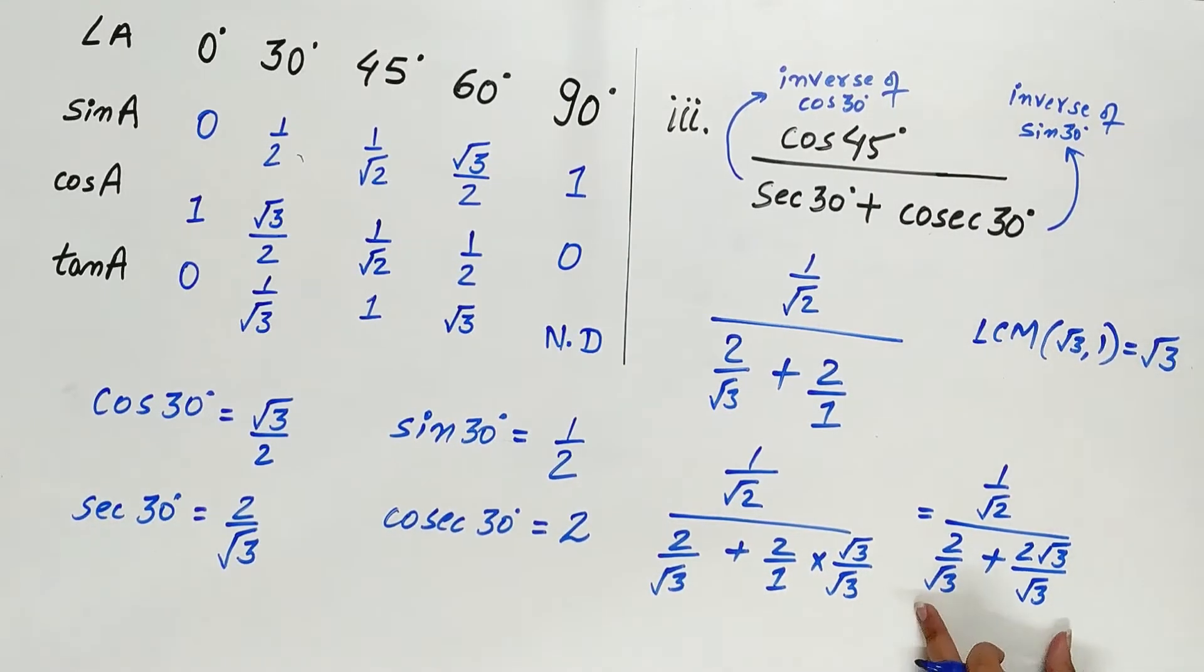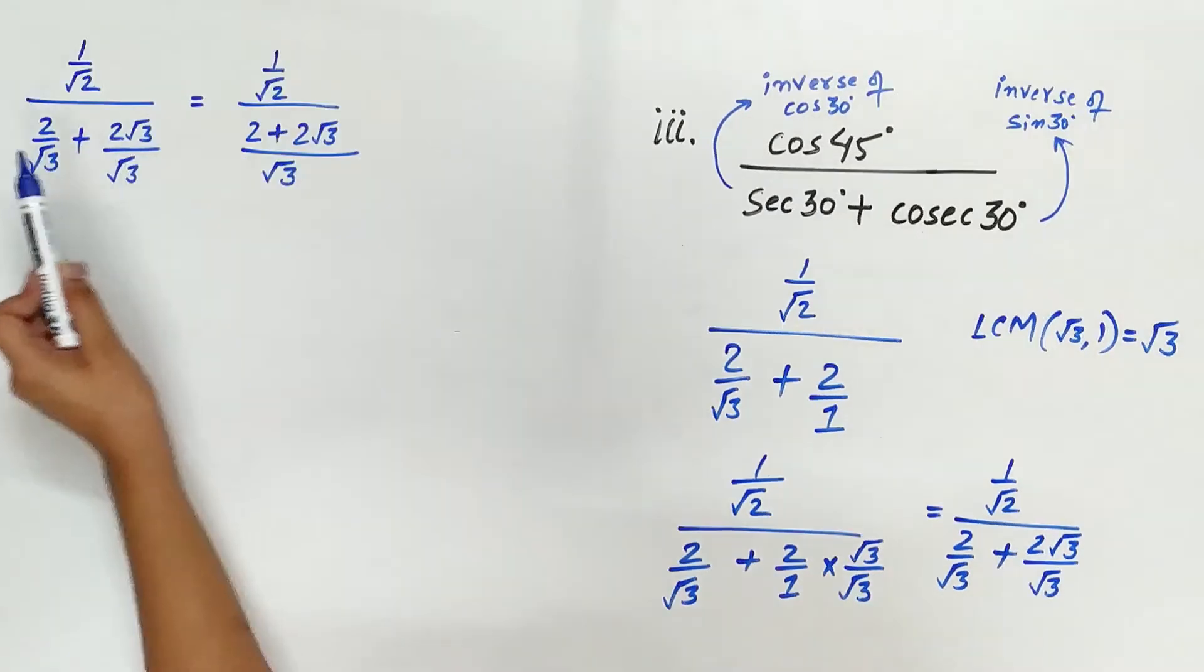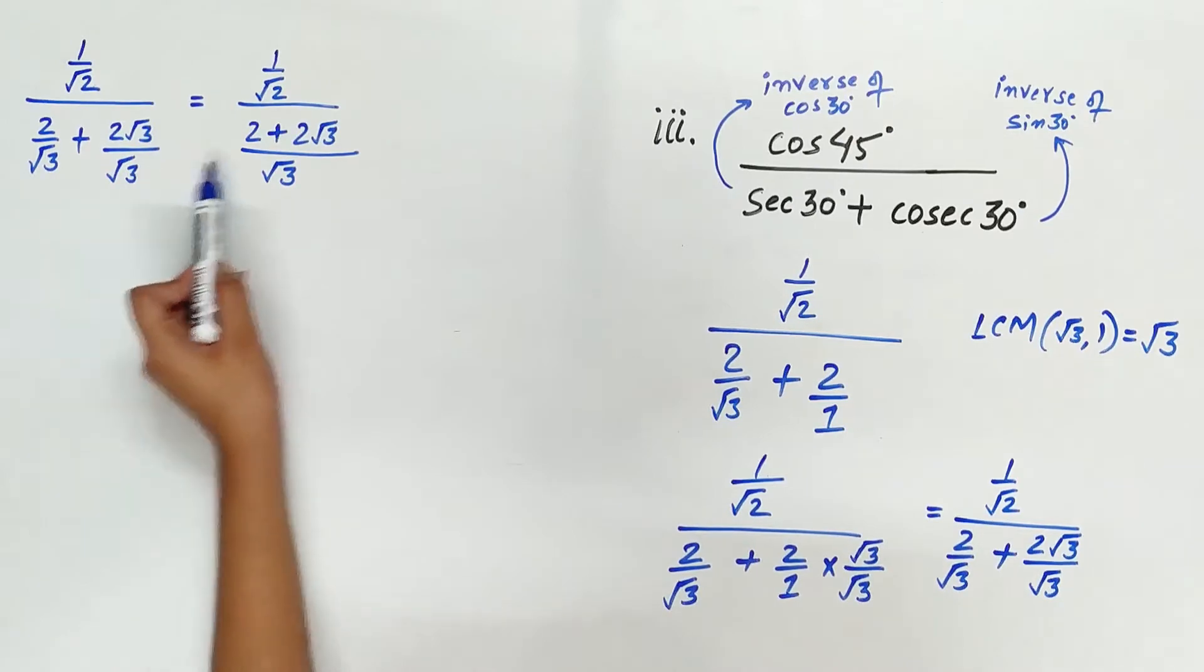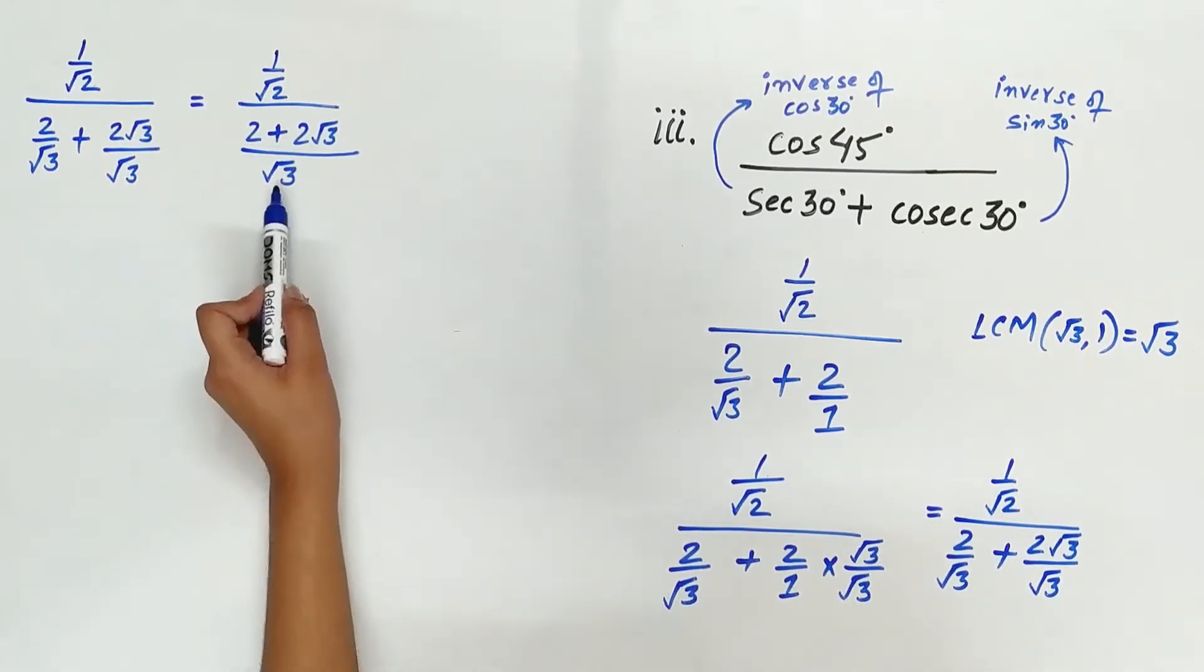We can add the terms because the denominators are same. 2 by root 3 plus 2 root 3 by root 3 is 2 plus 2 root 3 by root 3.